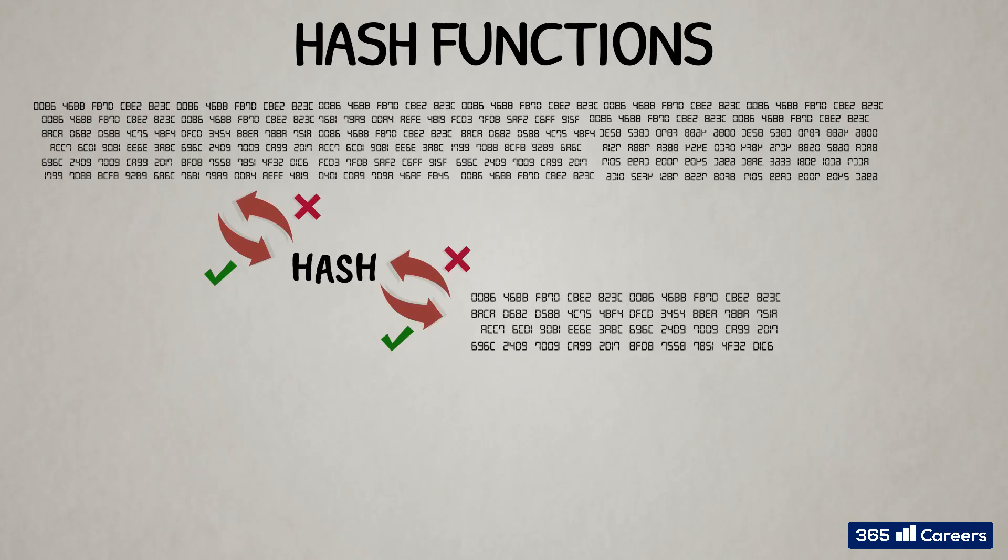Once we have the output, we cannot simply invert the function, plug in the output, and get input data on the other end. To illustrate what it means to invert a function, consider the four basic mathematical operations.